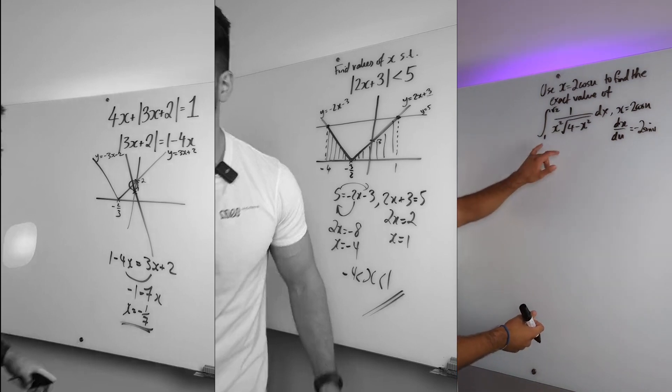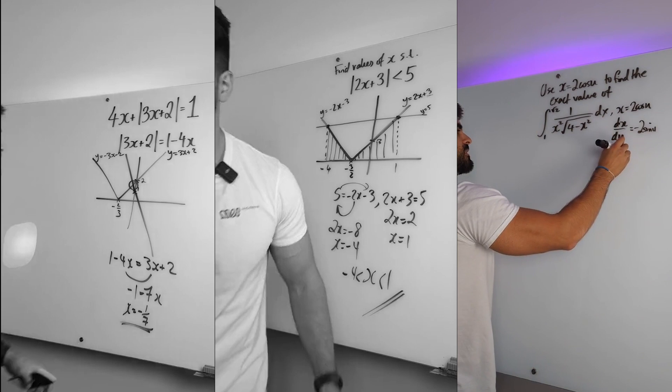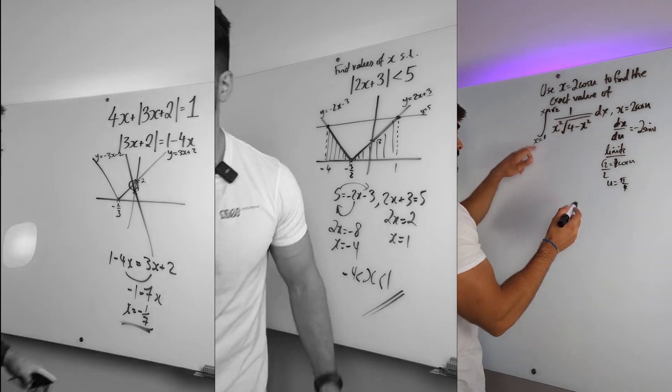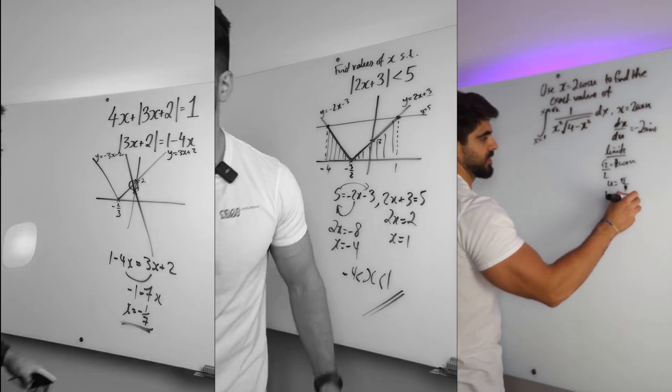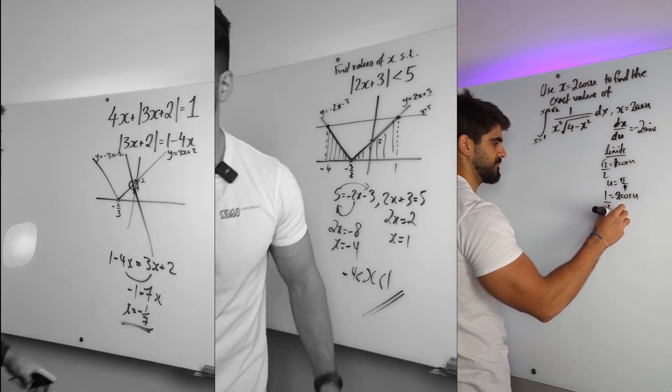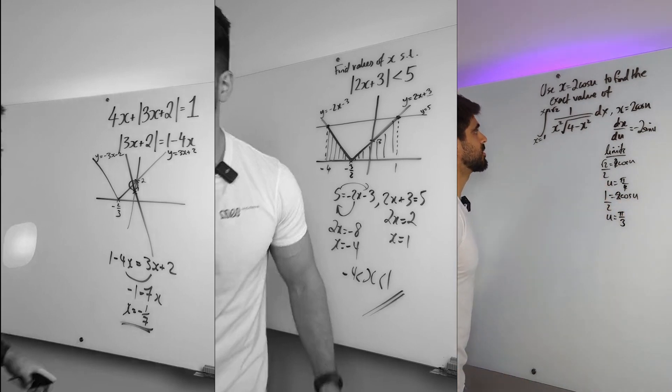Then I'll be doing the limits. So we're going to be subbing this into here, but let's do the limits as well. These are your x limits, we want to find the u limits. So when x is root 2, we get root 2 is 2 cos u. When you divide by 2, you get cos u is root 2 over 2, u is pi over 4. And then with 1, 1 is 2 cos u, divide by 2, inverse cos of a half is pi over 3. Alrighty then.